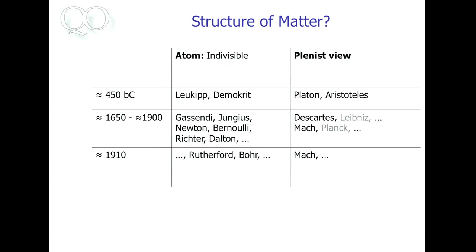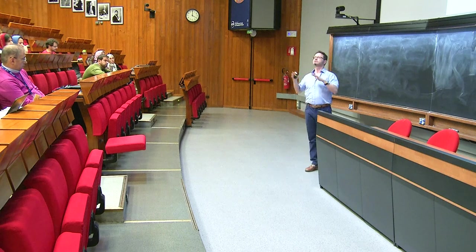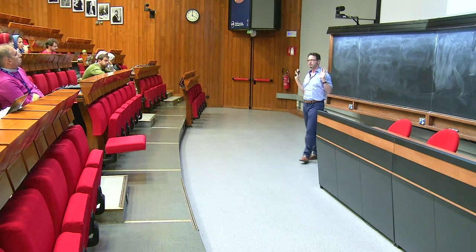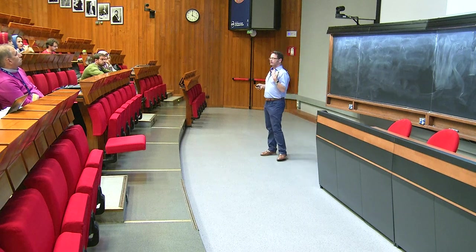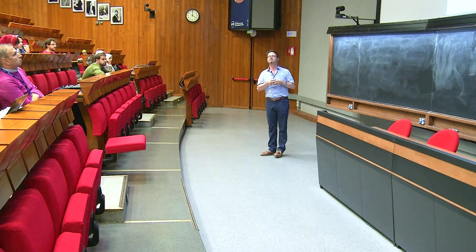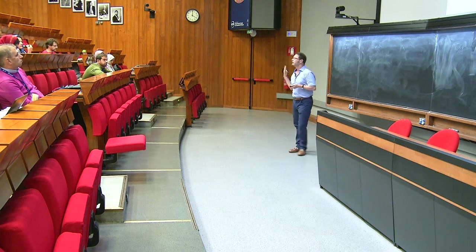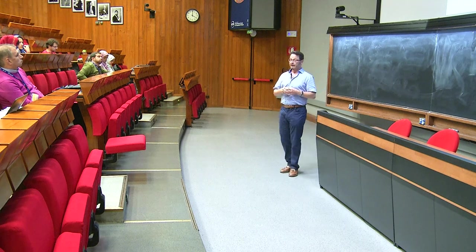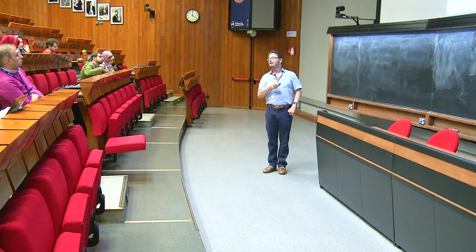So you certainly know about these experiments of these people on thermodynamics and chemistry. So they worked with the assumption or they came to the conclusion that matter is made up of atoms. But there were also very prominent people still adhering to this view here. And so Leibniz is in gray and Planck was in gray because they changed their mind later on. But there were people who did not change their mind.